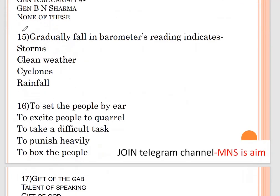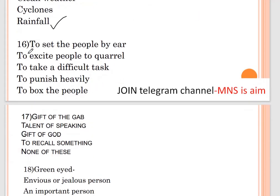Question number fifteen: a gradual fall in the barometer's reading indicates — options are storms, clear weather, cyclones, and rainfall. Question number sixteen: idiom 'to set the people by the ears' — options are to excite people to quarrel, or to take a difficult task.